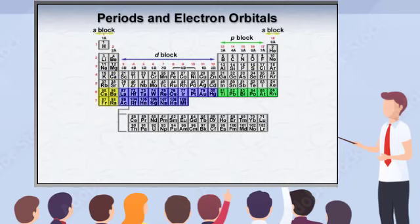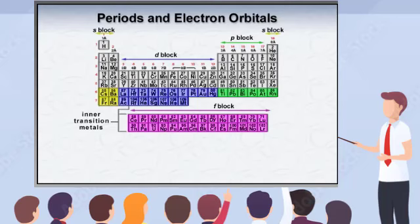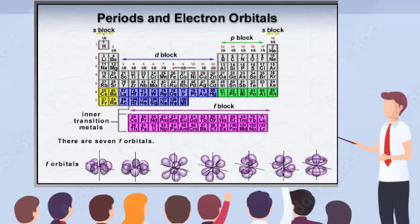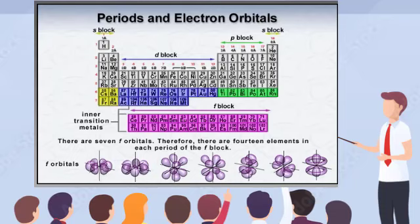Periods six and seven show the same electron filling pattern as the preceding periods with the addition of new F orbitals, which represent the inner transition series. There are seven different F orbitals, and since each orbital can possess two electrons, there are 14 different elements per period in the inner transition series, or the F block.